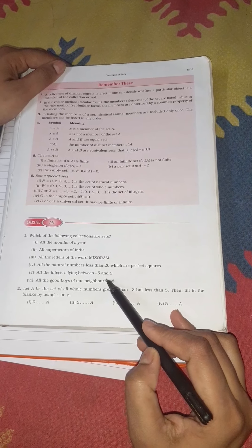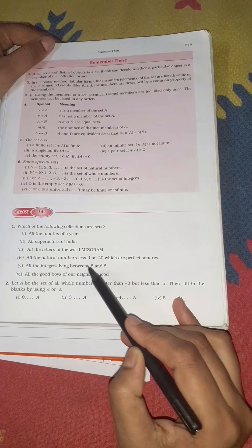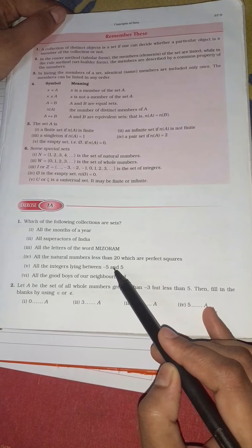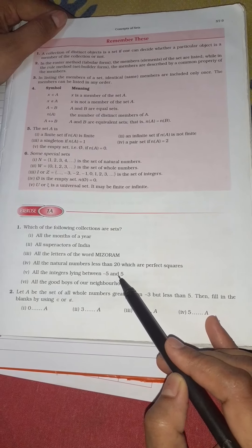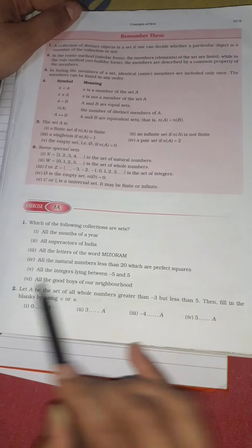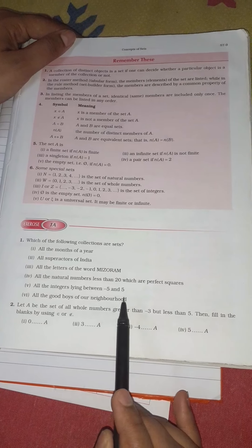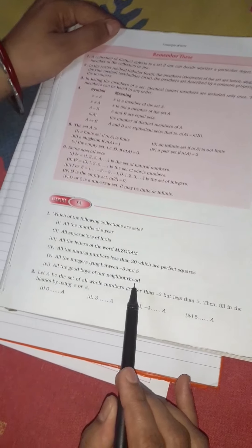All integers lying between -5 to 5. Obviously the integers between -5 to 5 are -4, -3, -2, 0, 1, 2, 3, 4. Yes, we can write it in the form of a set, so it is a set. All the good boys of our neighborhood - no, we can't say how many good boys are living in your neighborhood, so it is not a set.